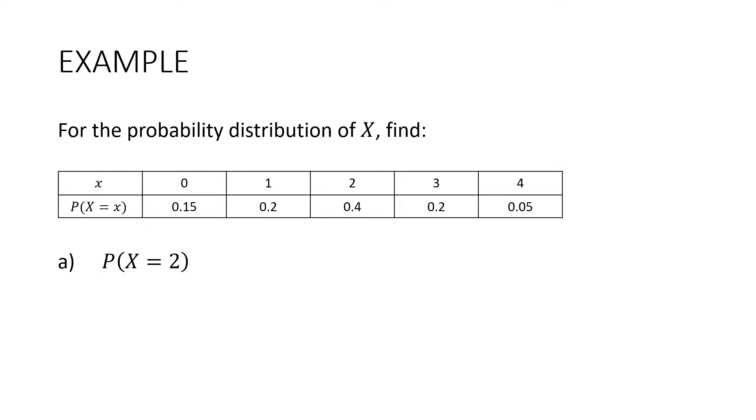Now, this is how we commonly write probability distribution in a table. We have our various values for X, 0, 1, 2, 3, 4, and we have our related probabilities. What's the probability that X is equal to 2? Well, it's just 0.4. What's the probability that X is equal to 0 or 3? Remember, in probability, all means plus. So it's going to be 0.15 plus 0.2, which is 0.35.